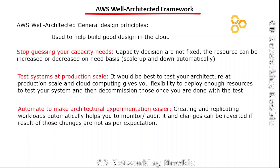The third principle is to automate to make architectural experimentation easier. We can create and replicate workloads automatically, which helps us monitor or audit whatever changes we are making during our experimentations. And if something is not working as per expectation during experimentation, those changes can be reverted.